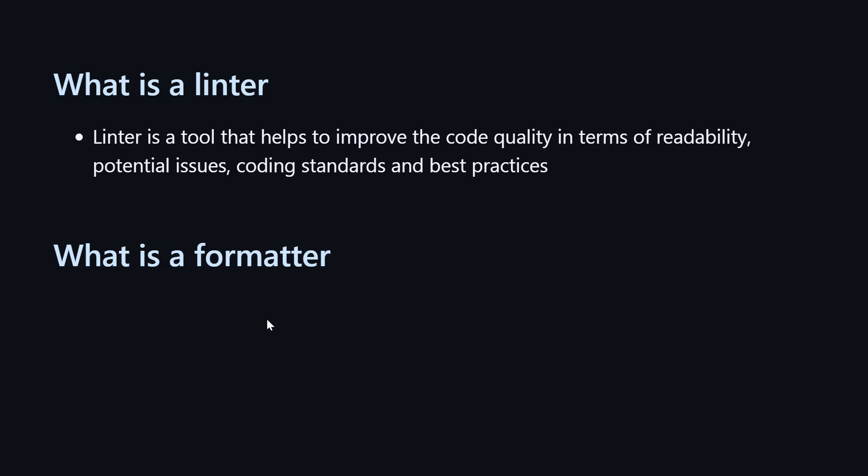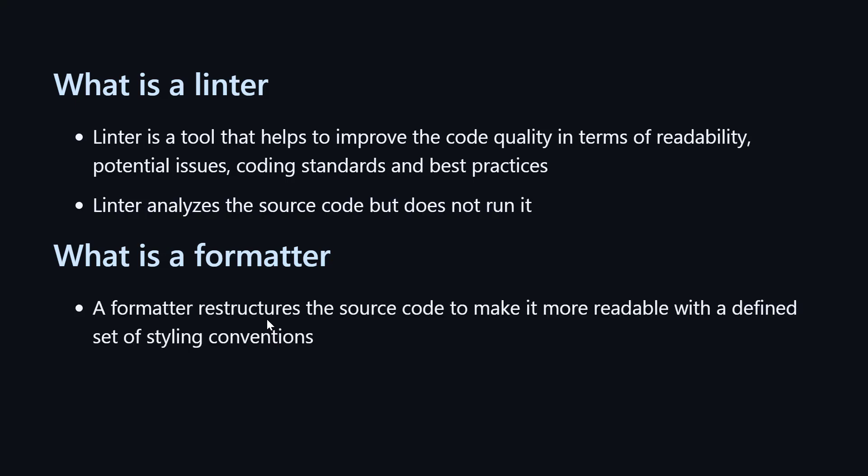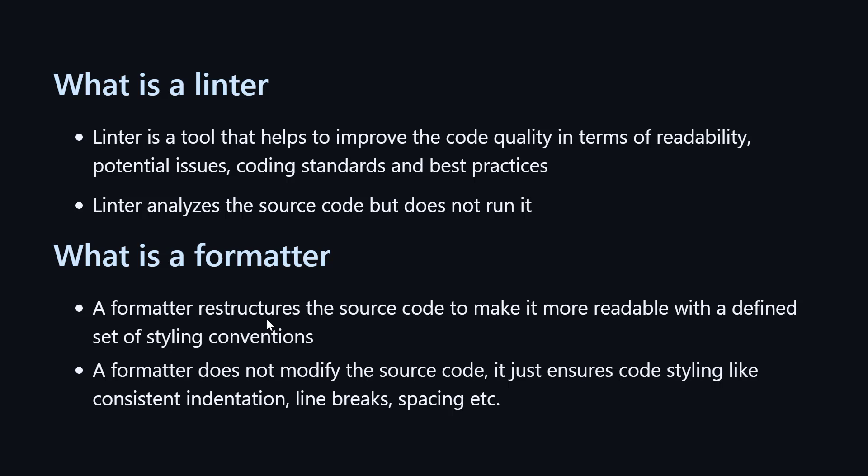Ruff is a Python linter and a formatter. What is a linter? A linter helps to improve code quality in terms of readability and coding standards. It analyzes the source code — it doesn't run it. A formatter restructures the code to make it more readable with a defined set of styling conventions. A linter actually changes the code to maintain coding standards, but a formatter doesn't change the code — it just formats it by adding line spaces or removing unnecessary spaces. It doesn't modify the source code; it just ensures styling.